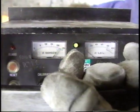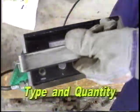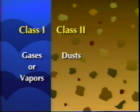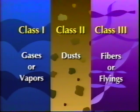The traditional NEC method classifies hazardous locations based upon the type and the quantity of ignitable material present. There are three classes. Class 1 has explosive or flammable gases or vapors. Class 2 has combustible dusts. Class 3 has ignitable fibers or flyings. You must select the equipment that is rated for the class of hazard present.